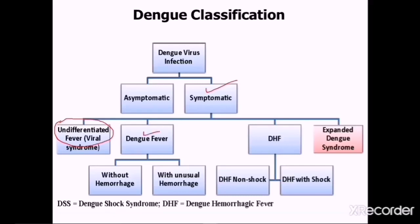Next is dengue fever, which can be without or with hemorrhage. Then is dengue hemorrhagic fever, which can be without shock or with shock. Then is expanded dengue syndrome, which is an unusual manifestation presenting as isolated organopathy — for example, liver failure, central nervous system dysfunction, or encephalopathy.